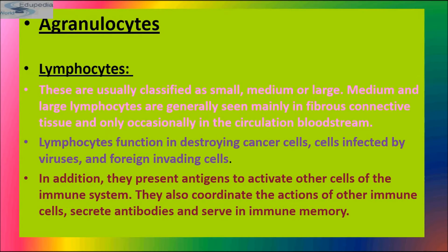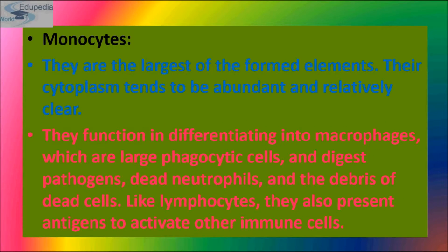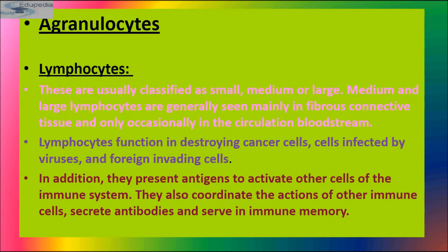Agranulocytes are the other category of WBCs and include lymphocytes and monocytes. Lymphocytes are usually classified as small, medium, or large. Medium and large lymphocytes are mainly seen in fibrous connective tissue and only occasionally in the circulating bloodstream. They have a very thin layer of non-granular cytoplasm at the periphery and a spherical, large nucleus. Lymphocytes are non-phagocytic in nature; their role is to produce antibodies and antitoxins.